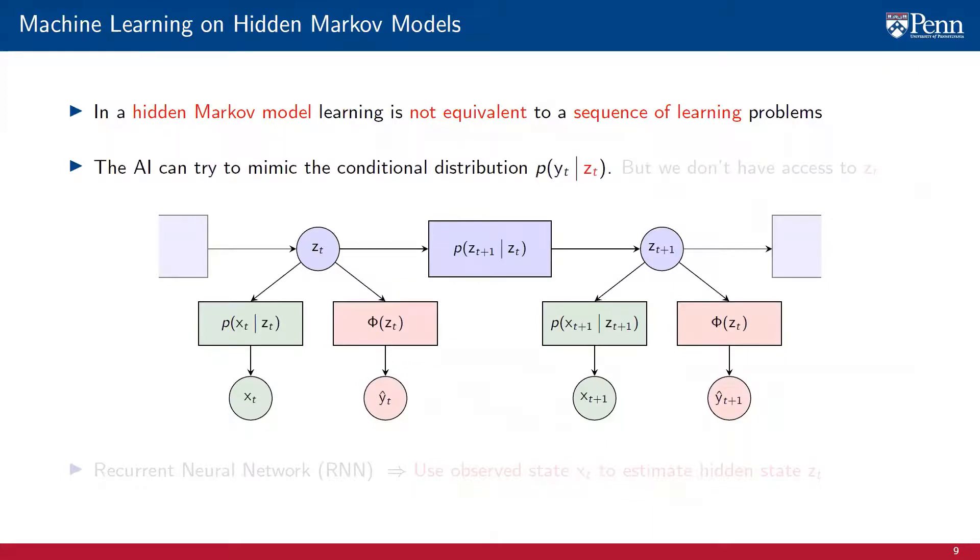But given that this is true, to predict the outputs of the stochastic process, it is enough for the AI to try to mimic the conditional distribution of yt given the hidden state zt. The AI could try to learn a mapping phi from zt to the predicted output y hat t.